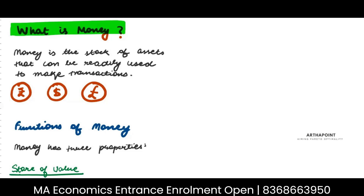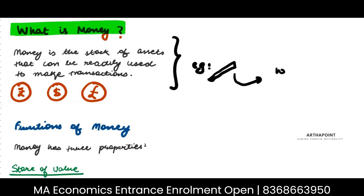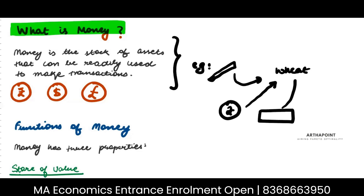Currently we are in a world where only paper money is used. For example, I cannot tell a shopkeeper: take my pen and give me wheat in exchange. I will have to go to the shopkeeper, give him rupees — a paper note — and in return he will give me wheat. So anything which can help me do my transaction is money. In this case, the paper note helps me do a transaction, so that paper note becomes money.